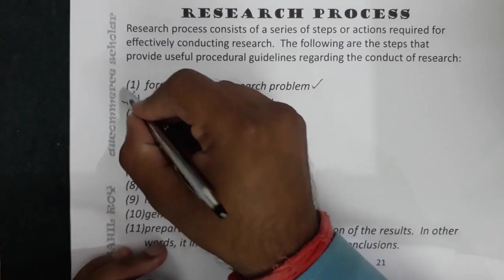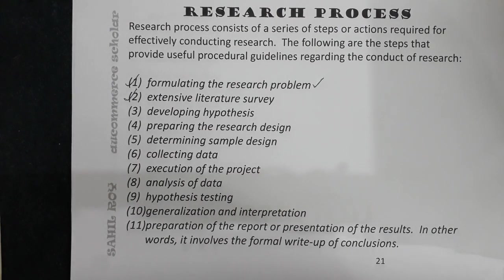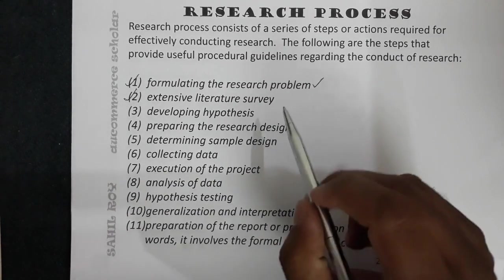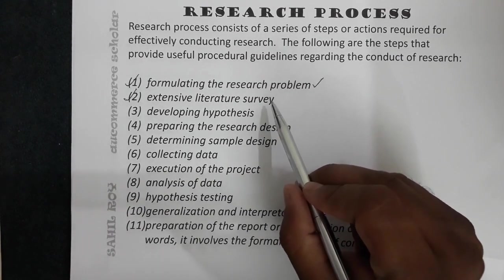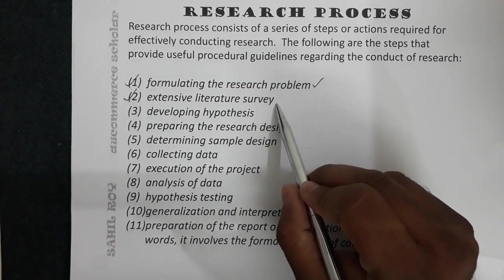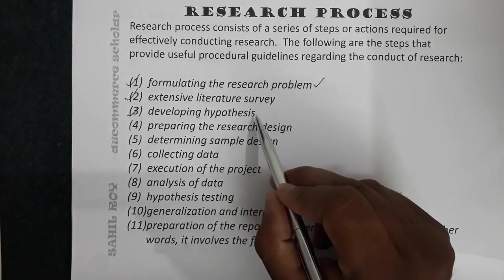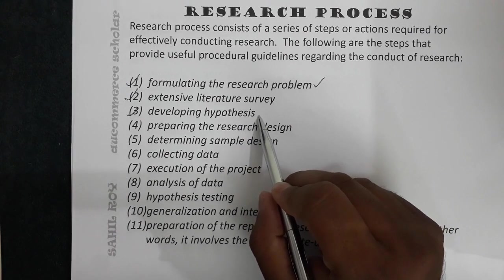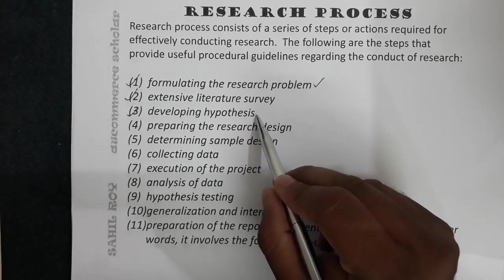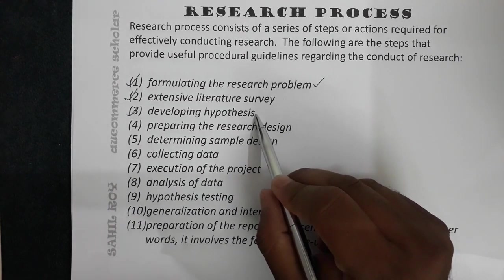The second step is an extensive literature survey — a review of existing literature. You look at how many studies have already been done on your topic, reviewing research articles, theses, and published works. The third step is developing a hypothesis. Note that not every research requires a hypothesis, but you can develop one if needed.